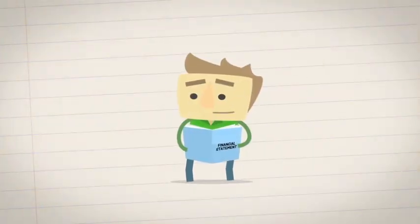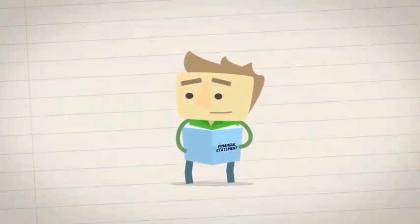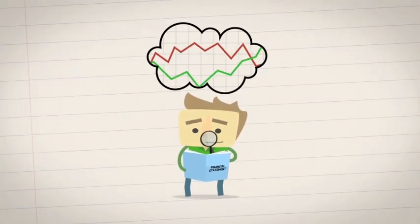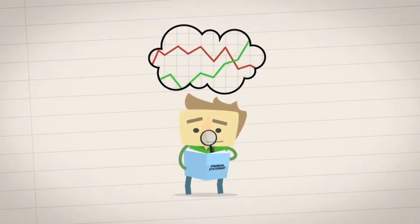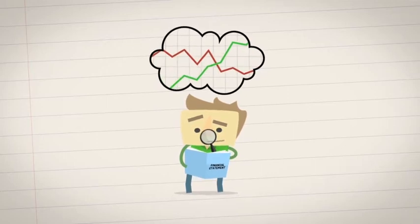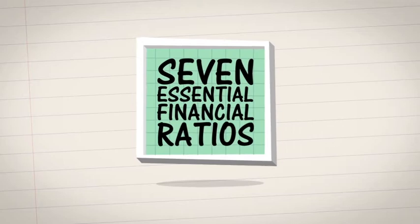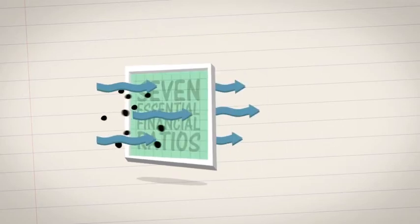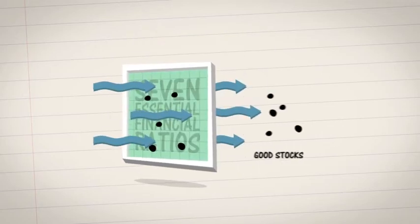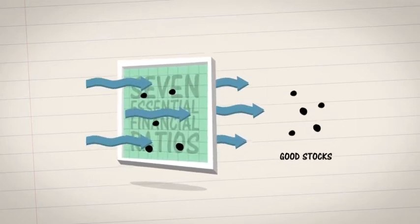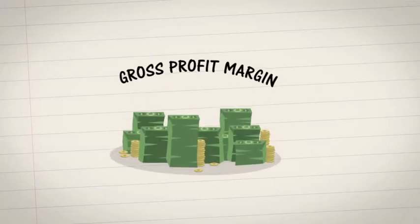Reading financial statements is one thing — analyzing them and deciphering their true meaning is another. To do that, you need to understand the seven essential financial ratios. They're like a shortcut for filtering out good stocks.